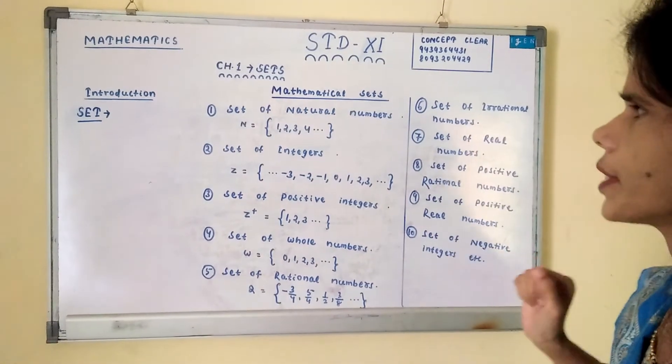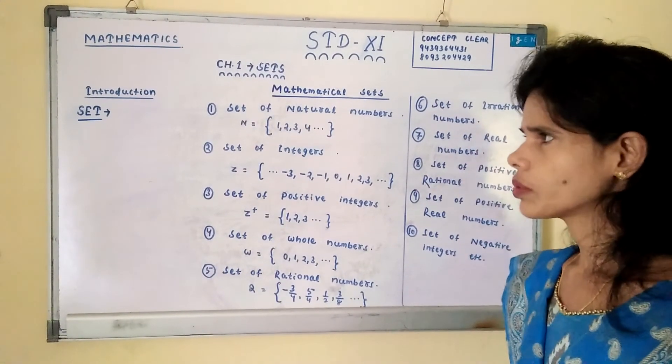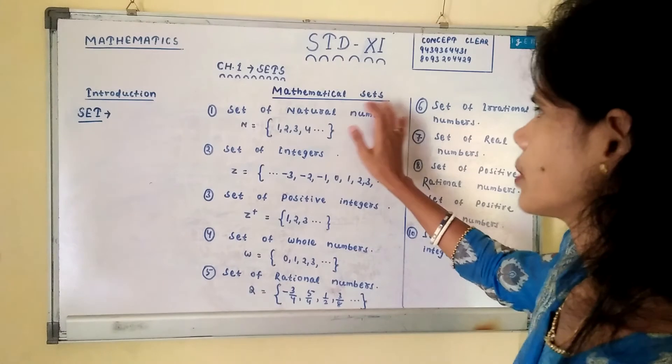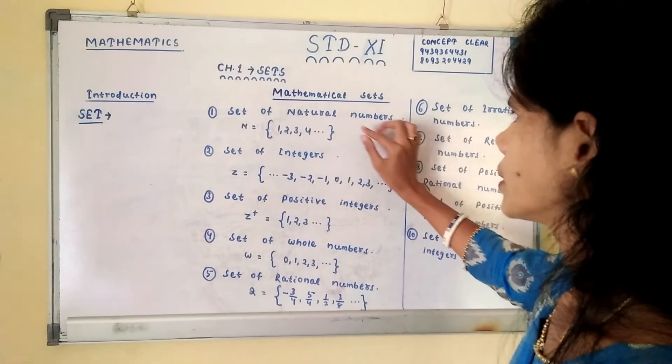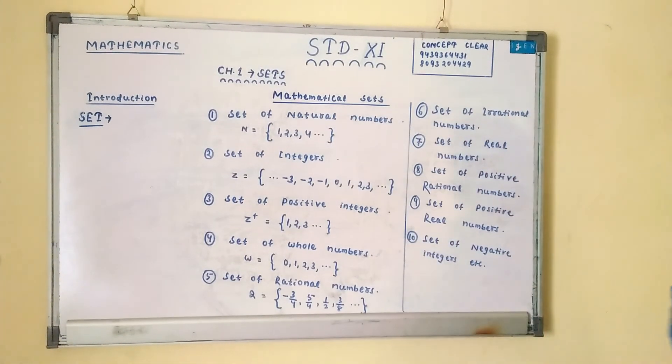And these are all related to mathematics. So these sets are known as mathematical sets and can be represented in both forms: set builder form and tabular form or roster form.